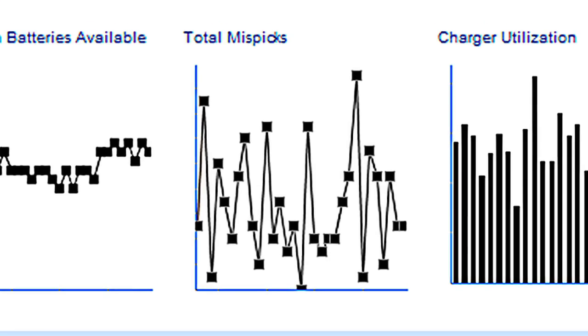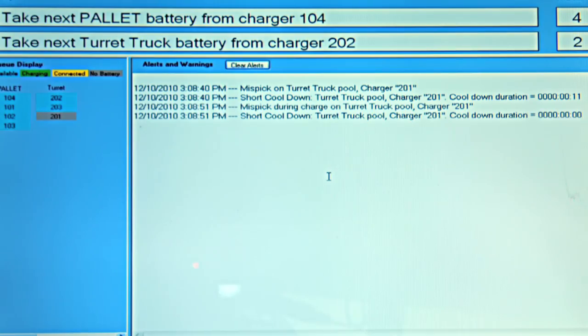It will allow those batteries to get full life by making sure they're properly rotated. It's also going to tell you about alerts. For example, every time a battery is incorrectly selected or mispicked and that shouter goes off, an alert pops up on the alert window.